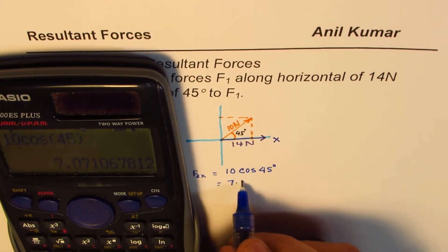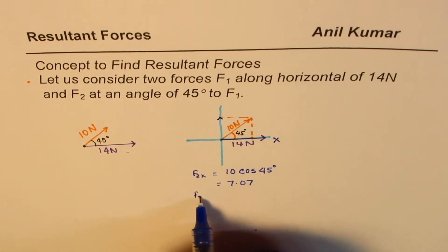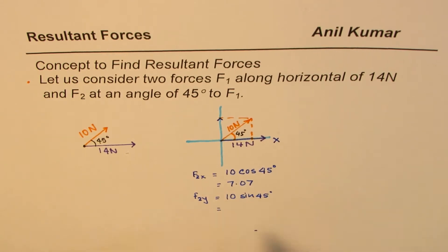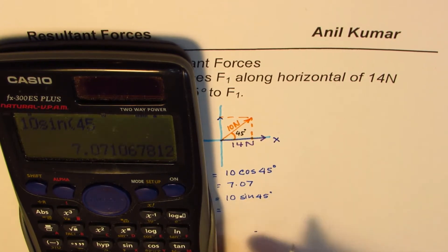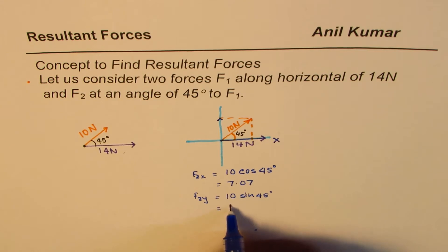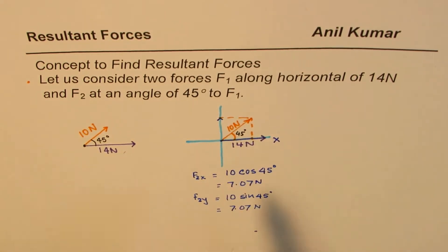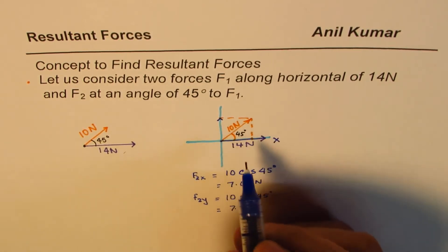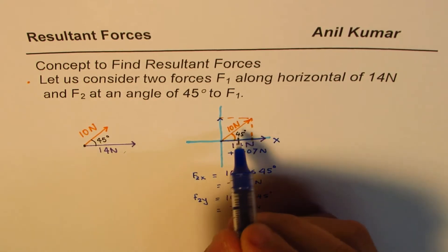The vertical component F2y equals 10 sin 45 degrees, which is also 7.07 Newtons. So the net force along the X axis now includes an additional 7.07 Newtons from the 10 Newton force, and along the Y axis the force is 7.07 Newtons.